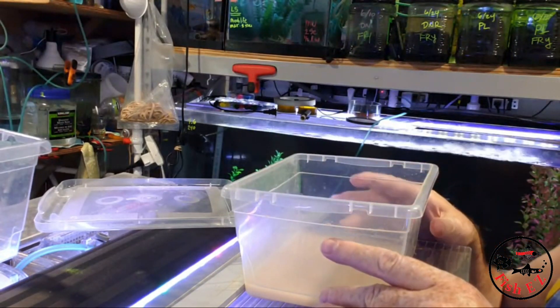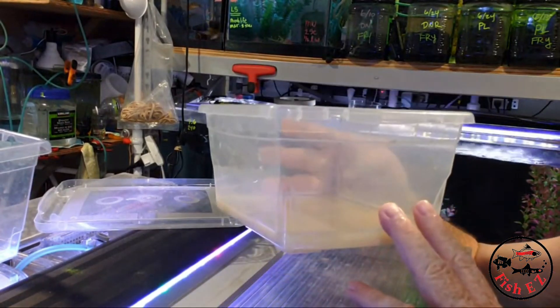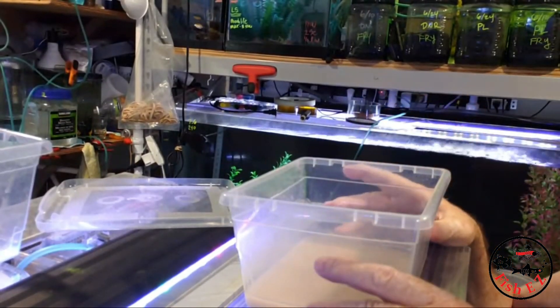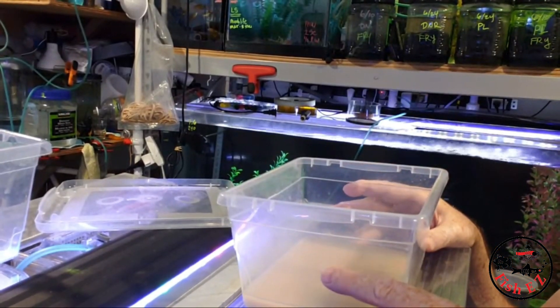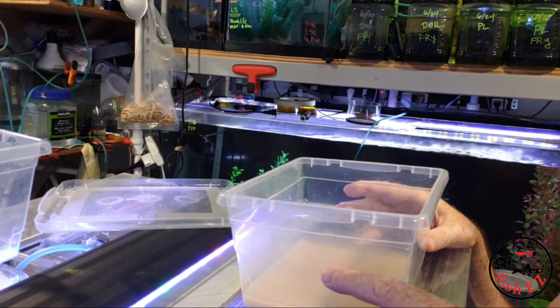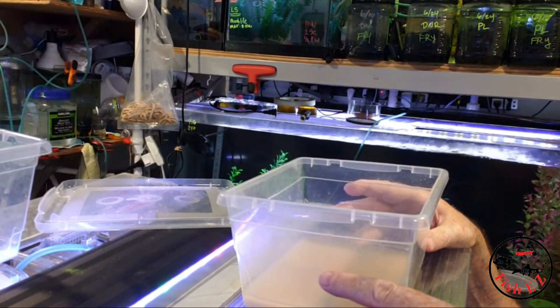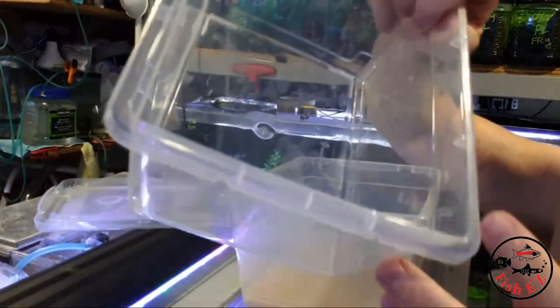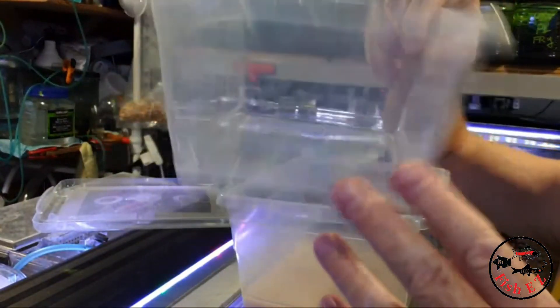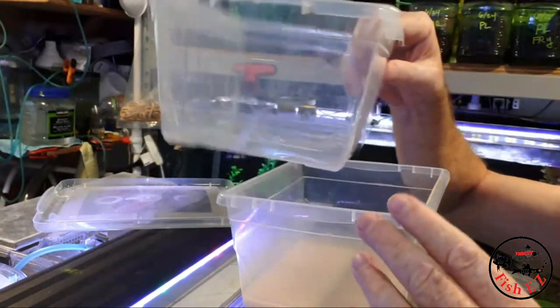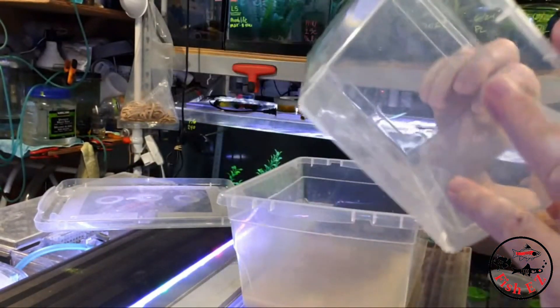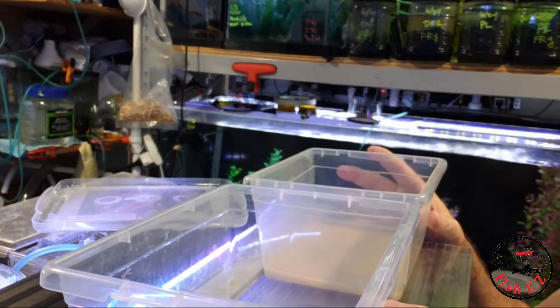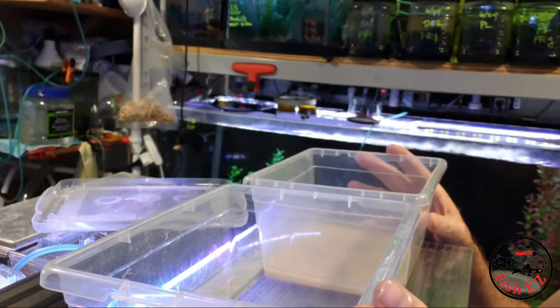But now the question has come up, what happens when you take your microworms and you want to start a new culture? Because after a while, this will start to go bad. The smell might start to become a little stronger. And what do you do? Well, what I'm going to do is I'm going to take another container. In this case, this is the container I'm going to use. It's the same size as this one, actually. I believe this is a 2-liter container.